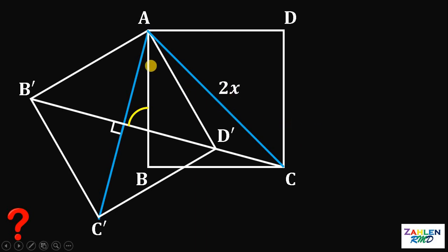And since diagonals of a square bisect each other, therefore, this segment right here must be equal to half of 2x or simply x.